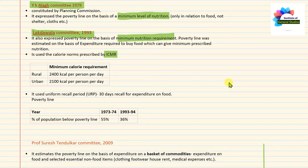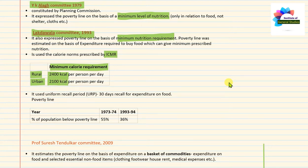According to the Lakdawala Committee, the minimum calorie requirement for rural India was 2400 kcal per person per day, and for urban people it was 2100 kcal per person per day. Rural people need more minimum calories than urban people because in rural India, labor-oriented work such as agriculture fields demands more physical effort. This is why the calorie requirement is higher for rural people compared to urban people.